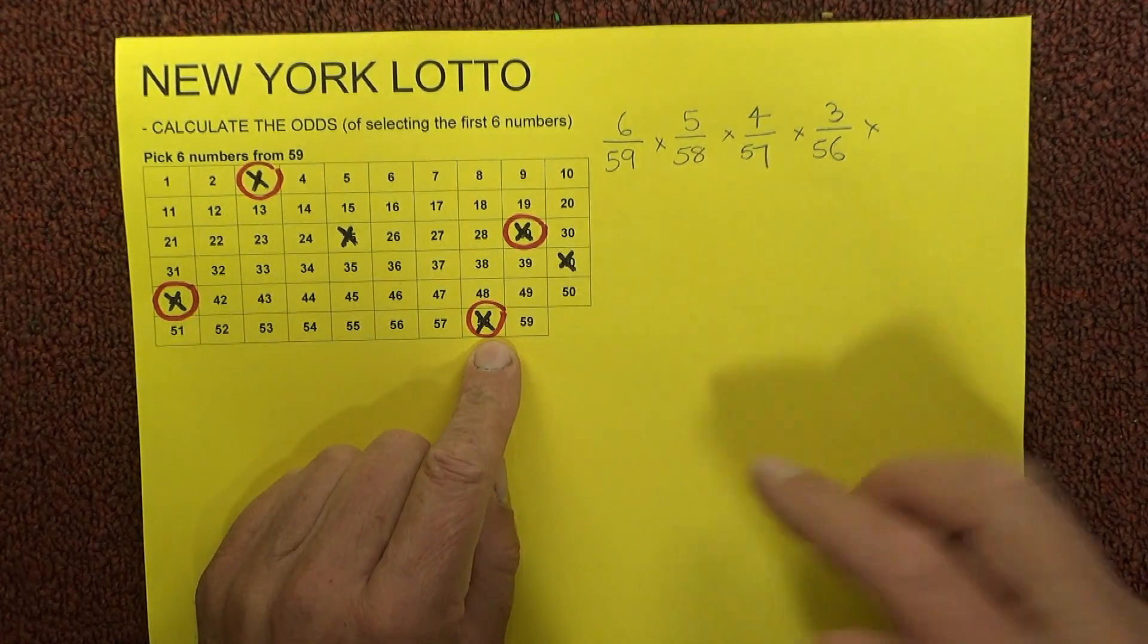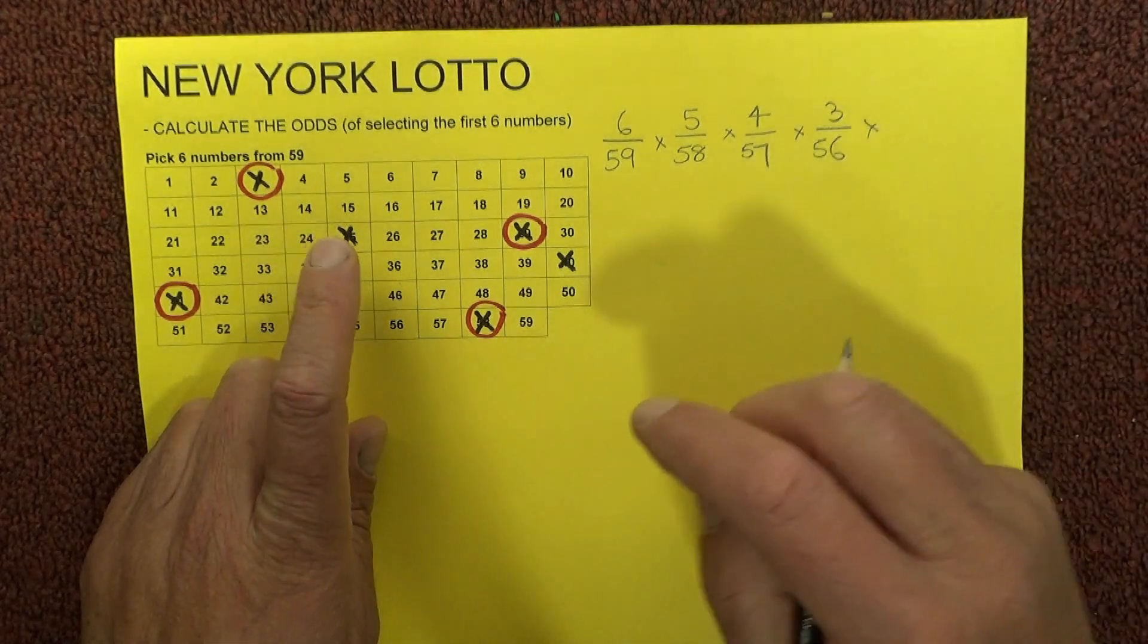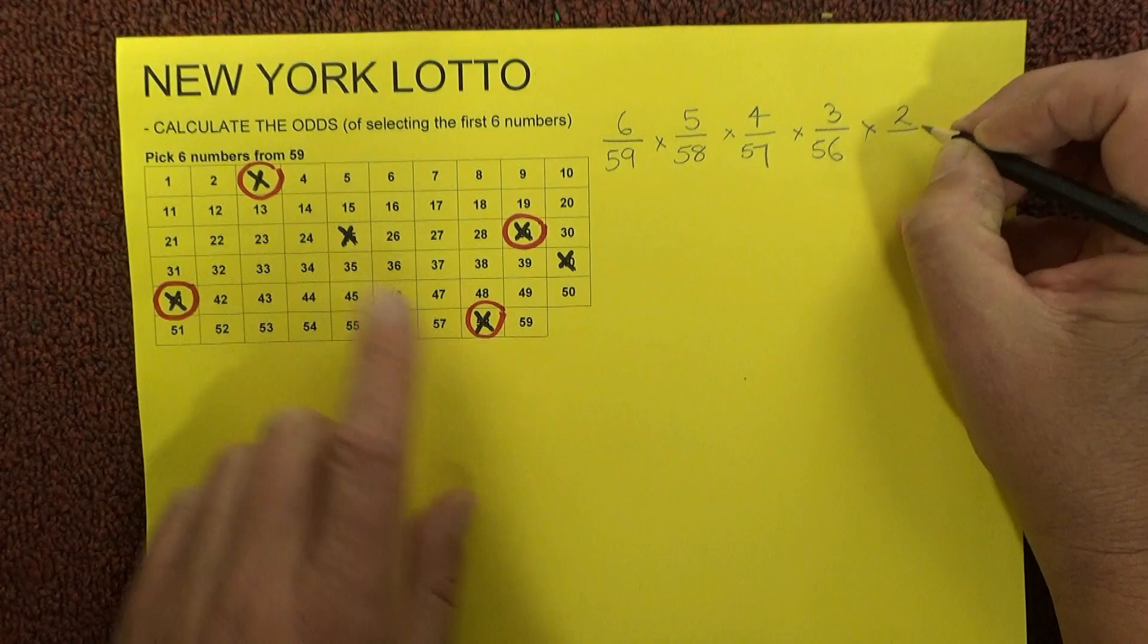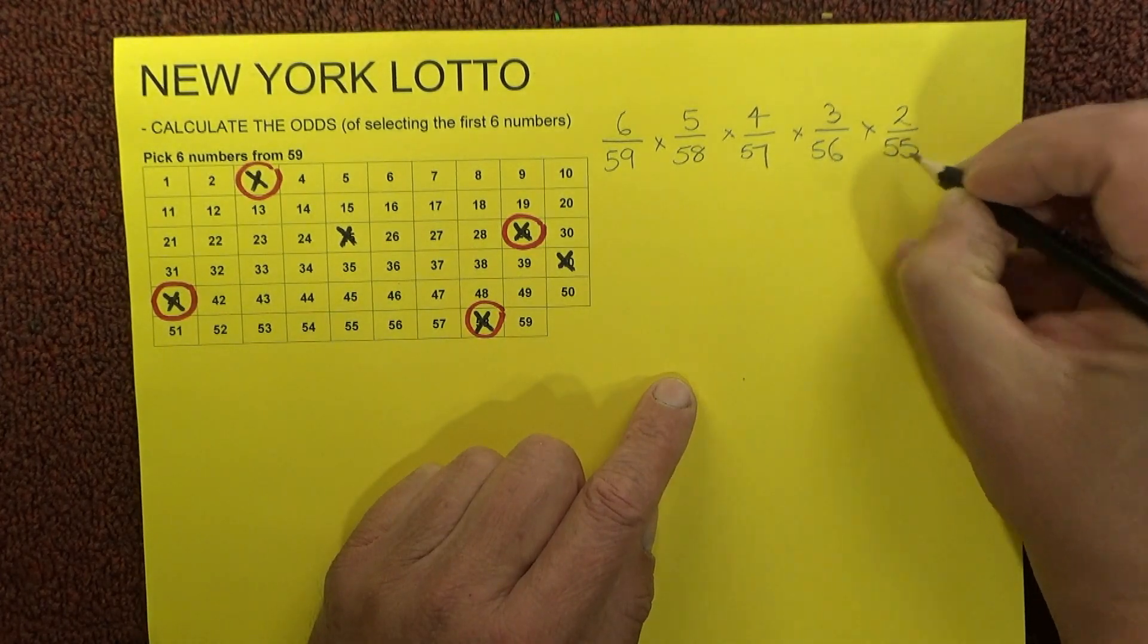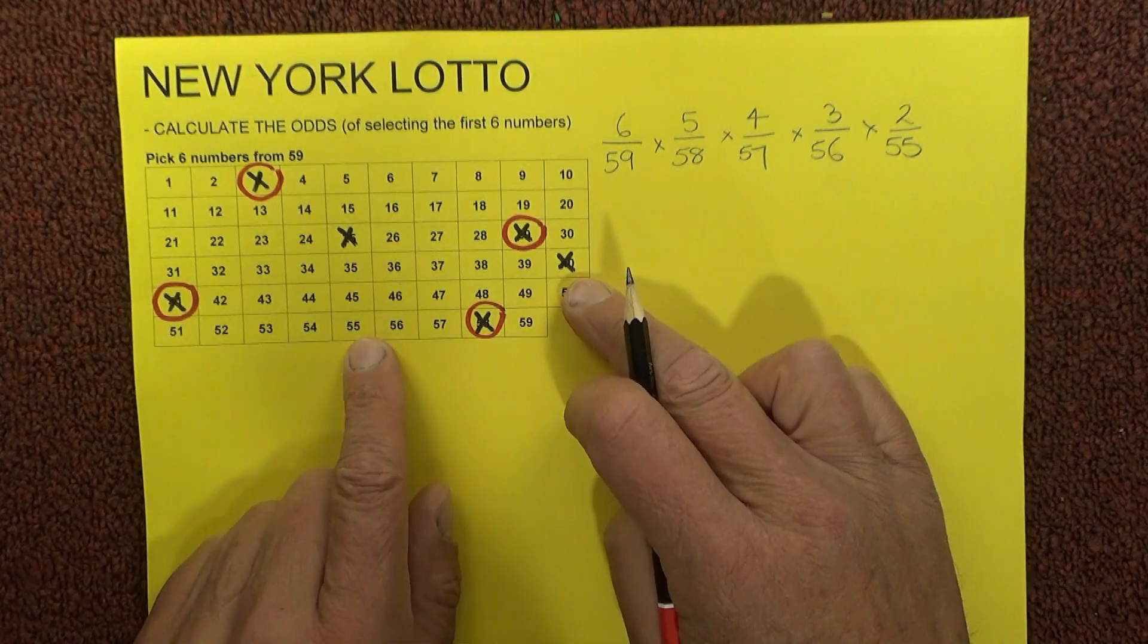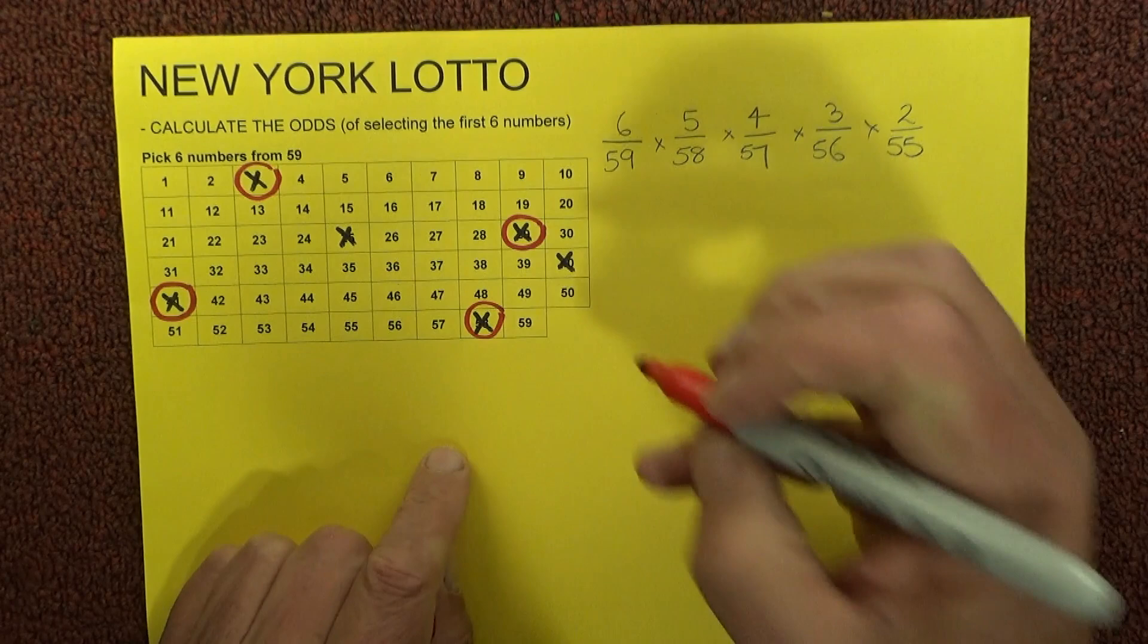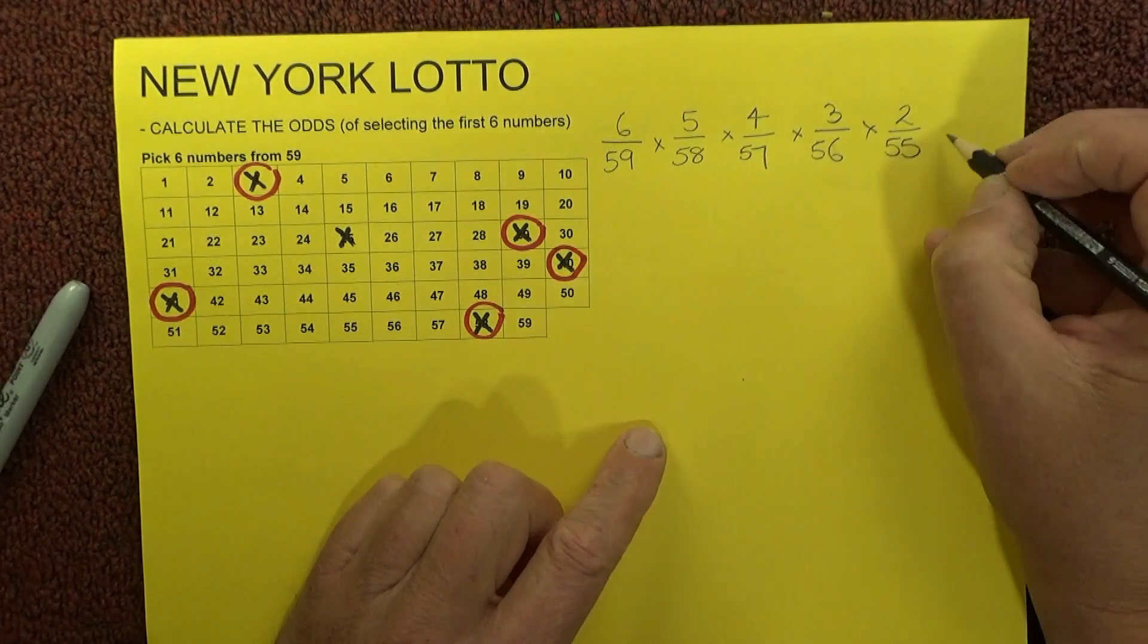Now when the fifth number is drawn, 1, 2 - two unmatched numbers left on your coupon, 55 balls in the barrel left. So you've got two chances in 55 of matching the fifth number. I'll mark off number 40 there to indicate that you have actually matched that.